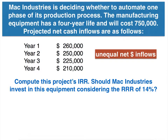Mac Industries is deciding whether to automate one phase of its production process. The manufacturing equipment has a four-year life and will cost $750,000. The projected net cash inflows are four differing amounts — unequal net cash inflows. Try to compute this project's IRR using the present value of lump sum tables, getting close to a net present value of zero. Should Mac Industries invest in this equipment given the company's required rate of return of 14%? Push pause and give this a shot, then come back.